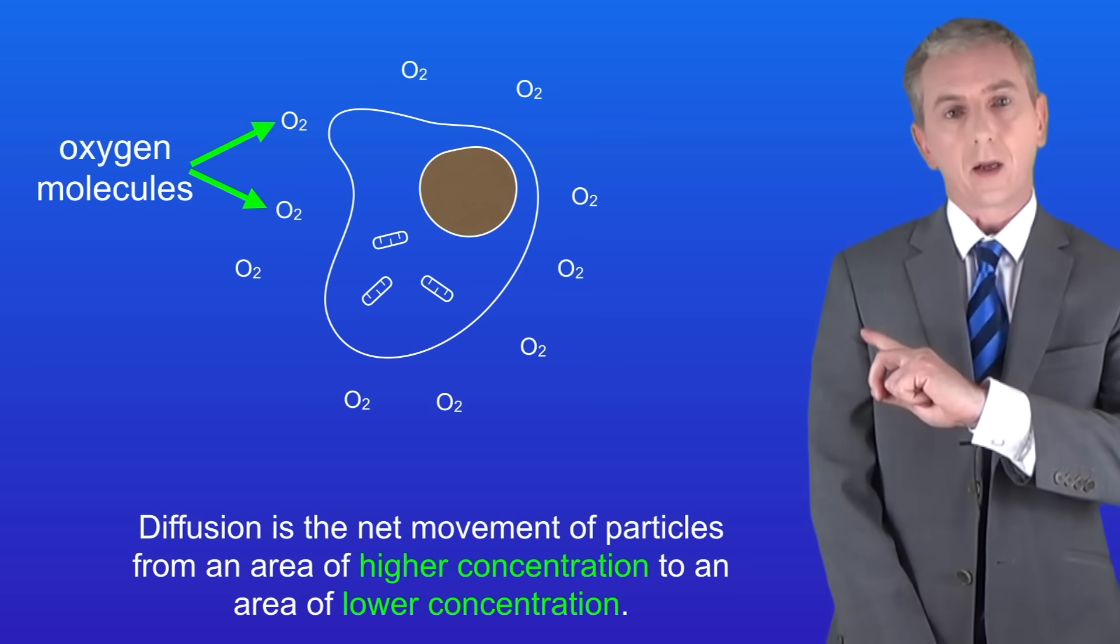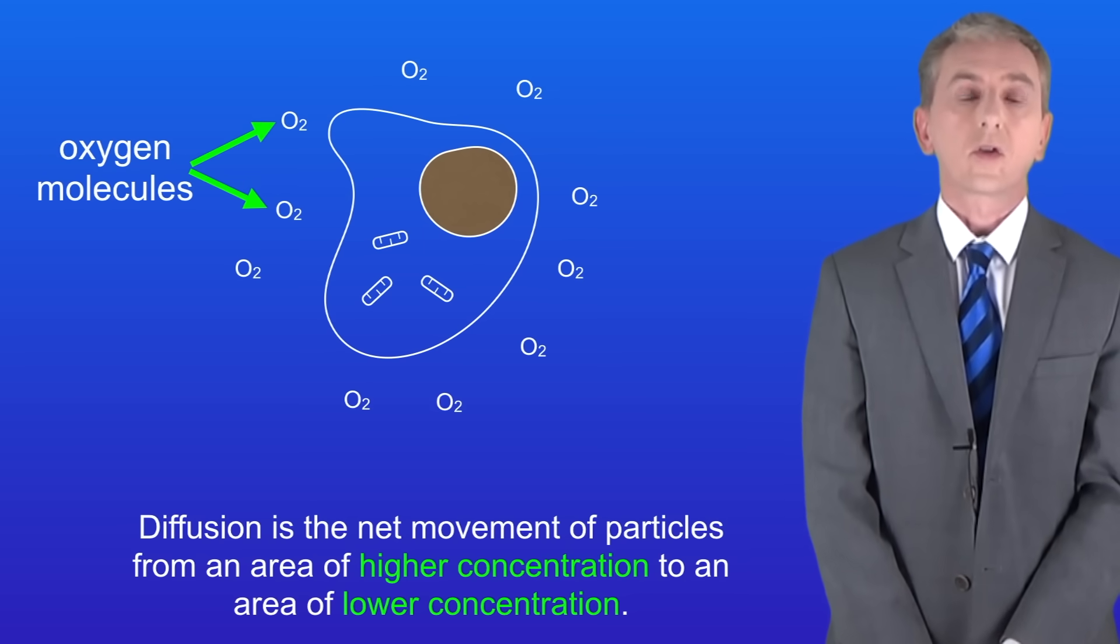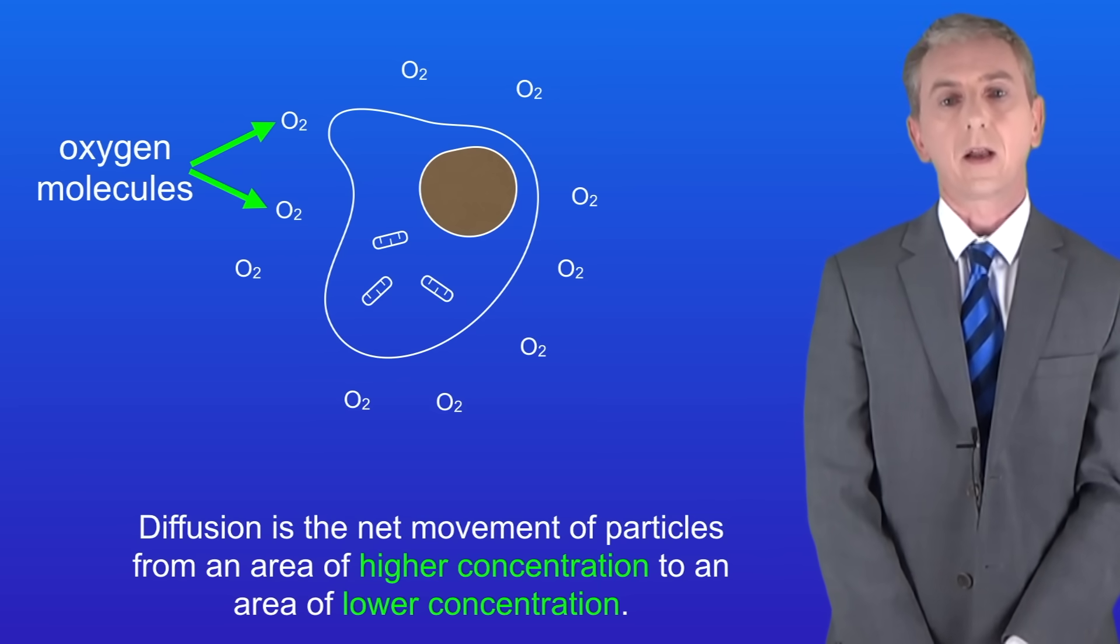So in this cell we can see a higher concentration of oxygen outside the cell than inside. This means that oxygen diffuses into the cell like this.